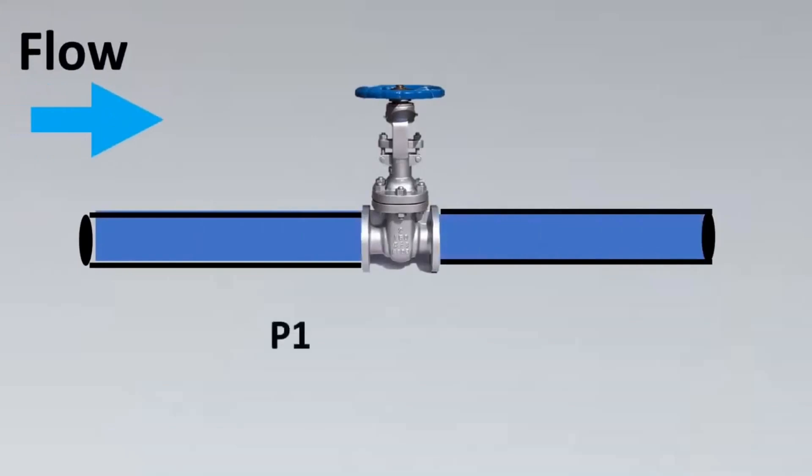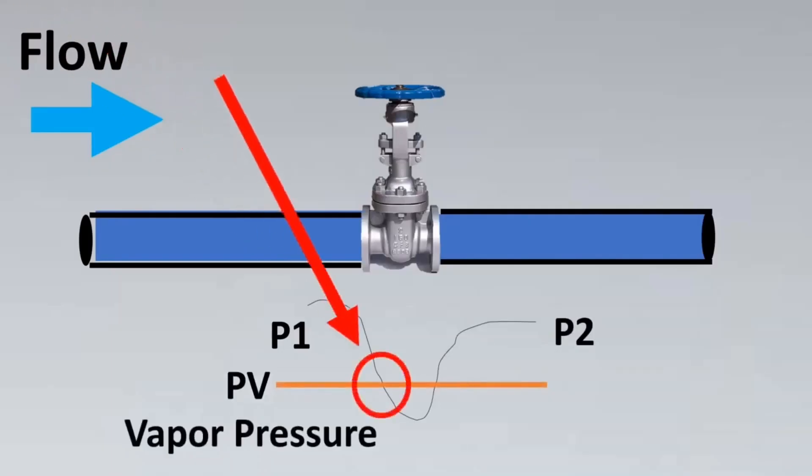Imagine this is your valve put in a line. With the flow there's some restriction, so you have a DP or differential pressure created. The upstream pressure is P1 and the downstream pressure is P2. This is your vapor pressure curve. When the fluid is at this particular region, it's going to change from liquid state to vapor state.